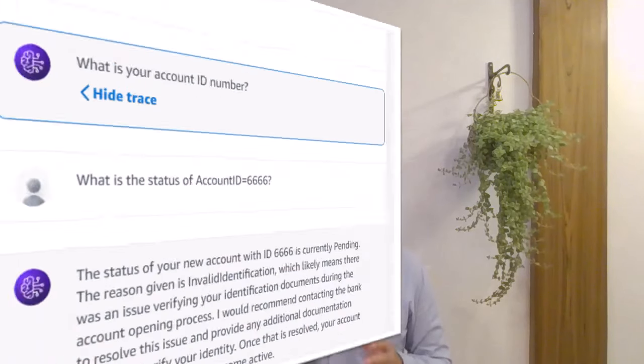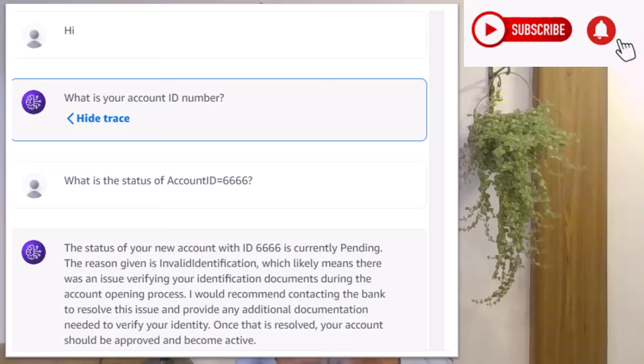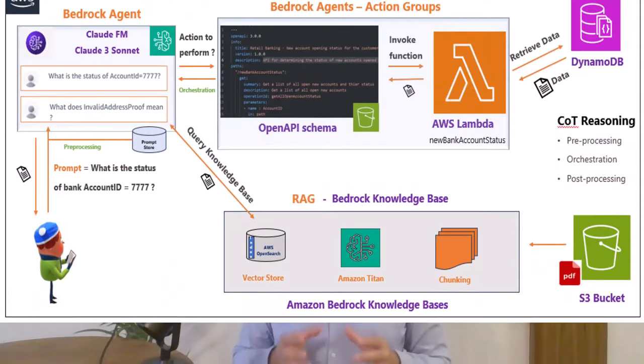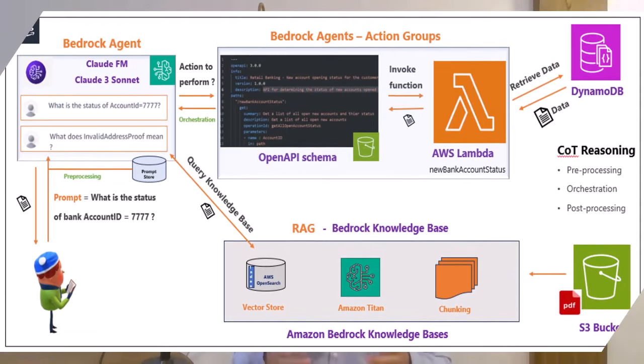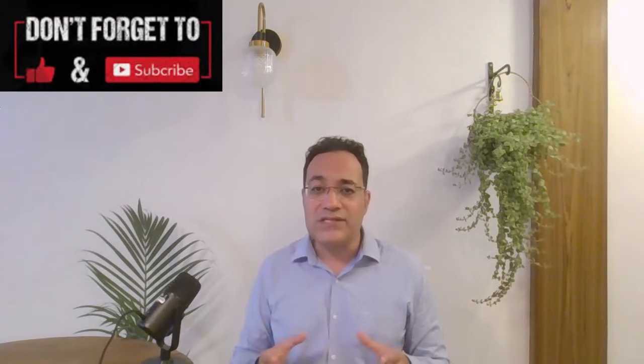Welcome to another video on Amazon Bedrock and Generative AI. In this video I'm going to show you how to build a retail banking agent which will answer the queries of the customers related to the status of their bank accounts. We're going to build this agent using Amazon Bedrock Agent, which you can think of as an orchestrator driven by the intelligence of a large language model.